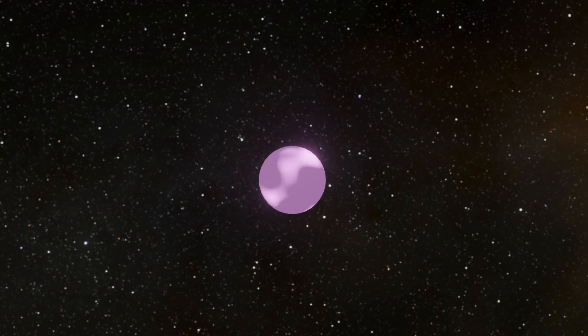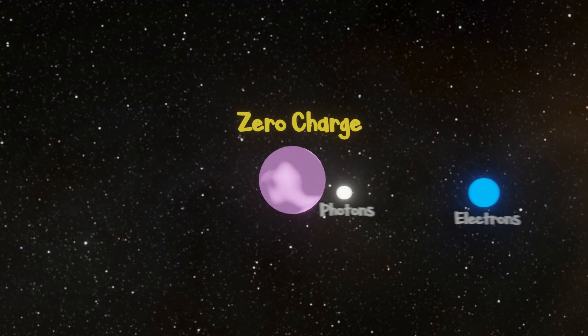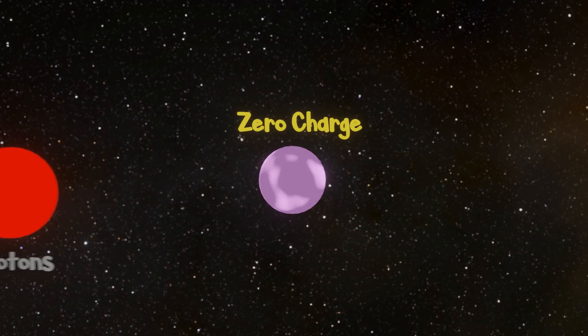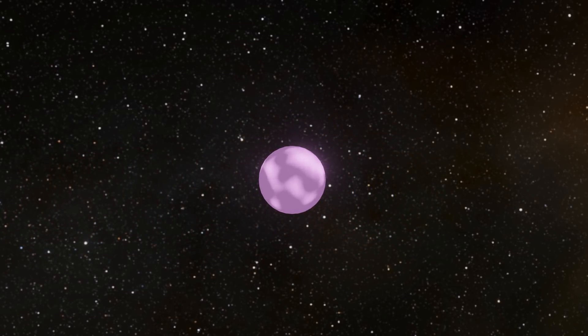A dark matter particle has zero electric charge. That means it doesn't interact with any other charged particles, be that photons, electrons, or protons. This is where the dark from its name comes from. No interaction with light means no light to give off.